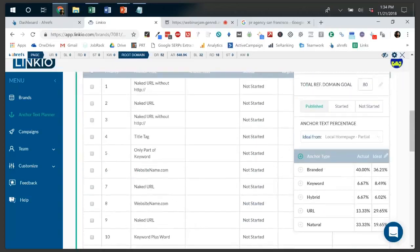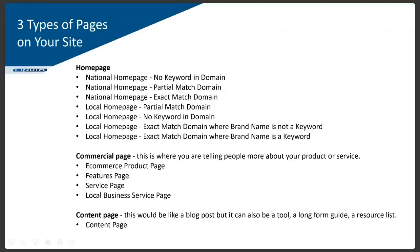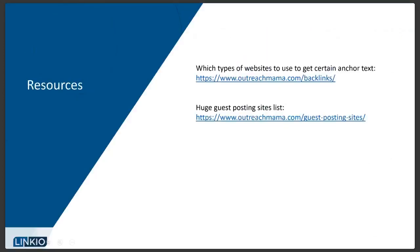There are also a couple of resources here. Once you have that game plan, you need to actually go out and get links. If you go to outreachmama.com/backlinks-guide it shows you, based on anchor type, the best types of websites to get those links from — naked URLs might come from directories, keyword-based anchors from guest posting, branded anchors from profile links or listicle roundups. And if you're interested in guest posting, there's a resource of over a thousand guest posting sites you can tap into.